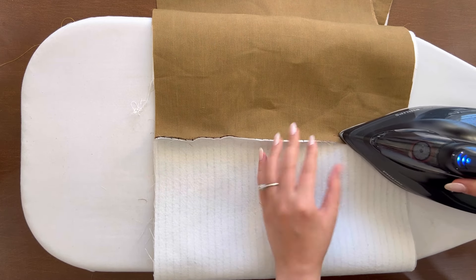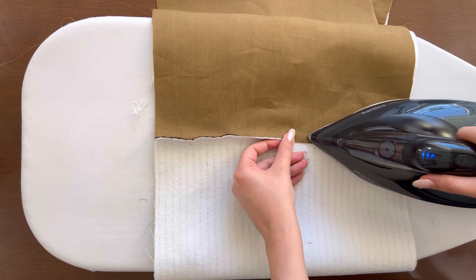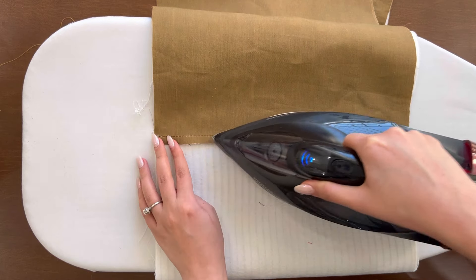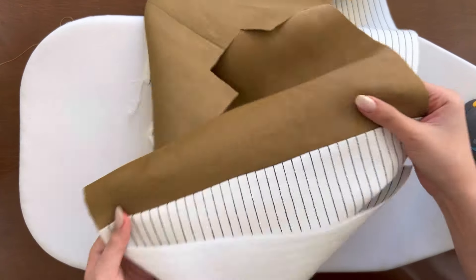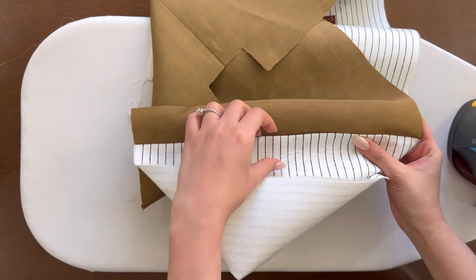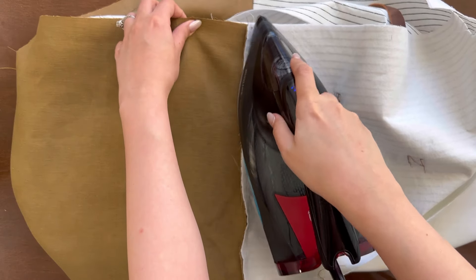On the side you have the 20 cm hole, press the seam towards the main fabric. Pressing it like this will help you after you want to do a topstitch on it.